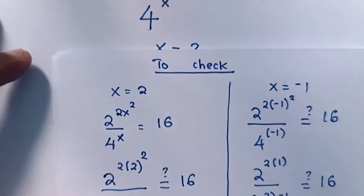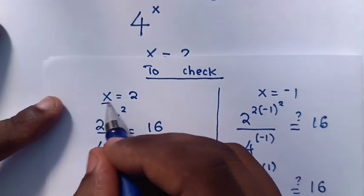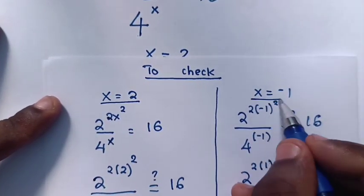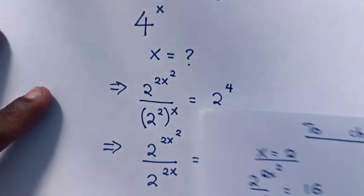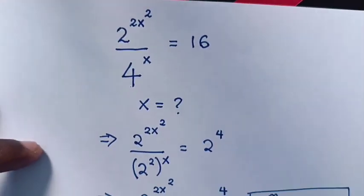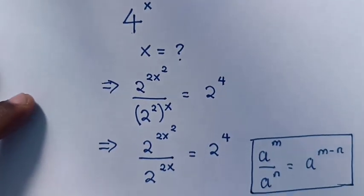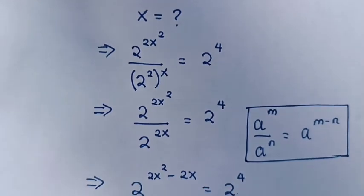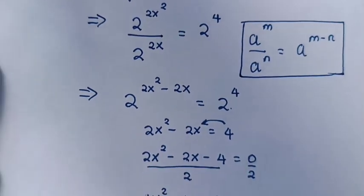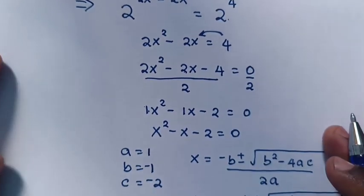Therefore, the values of x are 2 and negative 1. Don't forget these steps. Subscribe to my channel and see you in the next video. Bye-bye.